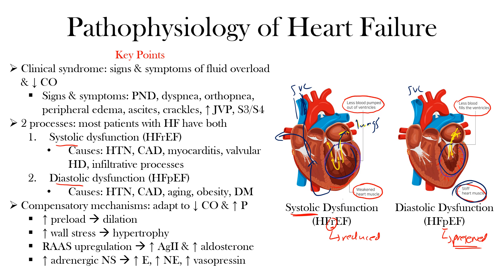A few compensatory mechanisms are activated to adapt to reduced cardiac output and increased pressures in heart failure. First, in response to an increase in preload, the heart dilates to improve myocardial contraction — this is the Frank-Starling mechanism. Second, in response to increased wall stress from elevated filling pressures and dilation, cardiomyocytes may hypertrophy. This initially reduces wall stress but eventually leads to reduced left ventricular compliance. Initially these changes attempt to maintain stroke volume, but over time they contribute to worsening cardiac function.